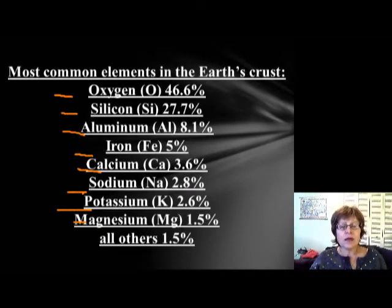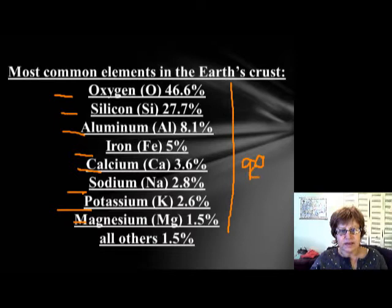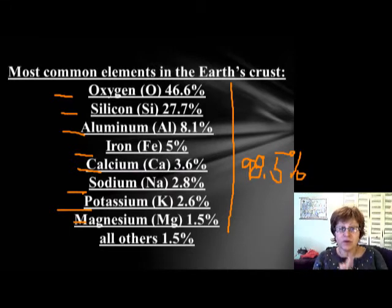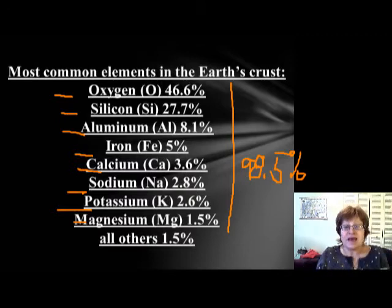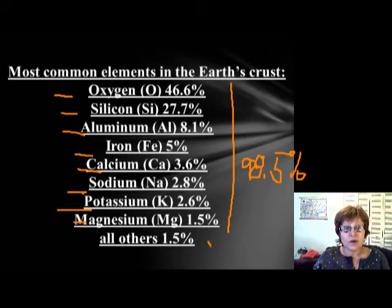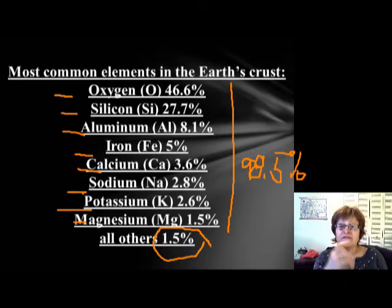If you add all of those up, it comes to 98.5 percent. This is remarkable because just about everything we can think of is in that list. All the other elements in the Earth's crust make up just 1.5 percent.